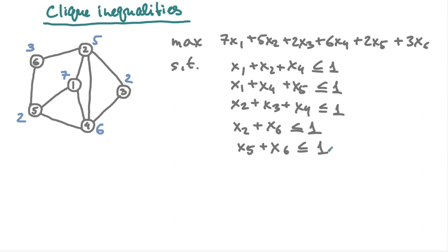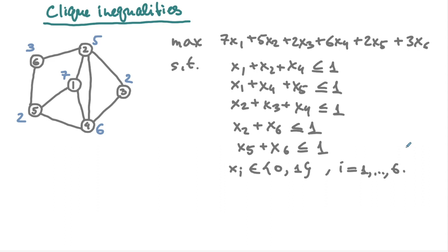This gives the complete formulation, with binary constraints x_i ∈ {0,1} for i from 1 to 6. This formulation describes the best we can do in terms of cliques, since we've listed all constraints for all maximal cliques in the graph. Next, we show that this is indeed the best possible using clique inequalities — listing all maximal clique inequalities is the best possible situation using this type of constraint.